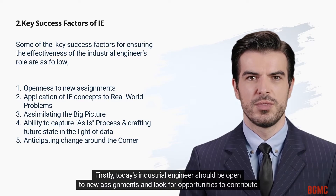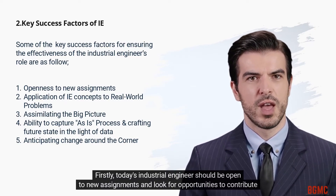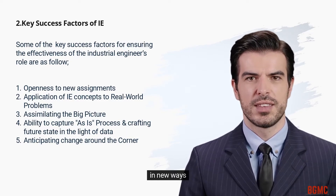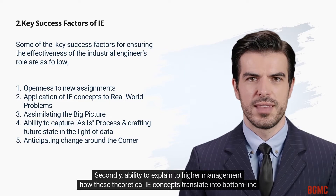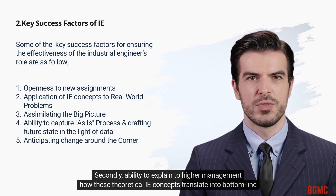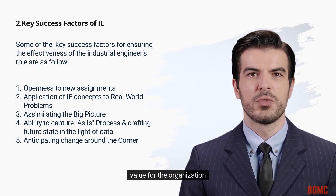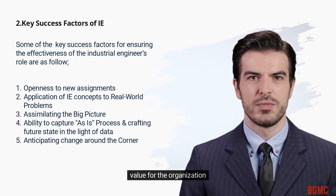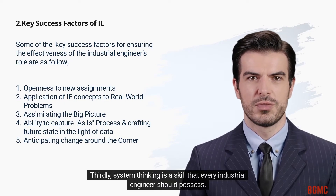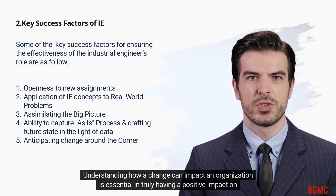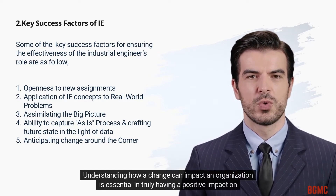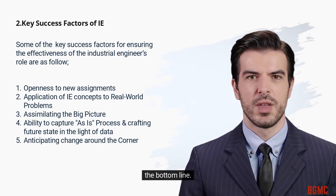Firstly, today's industrial engineer should be open to new assignments and look for opportunities to contribute in new ways. Secondly, the ability to explain to higher management how theoretical IE concepts translate into bottom-line value for the organization is essential. Thirdly, systems thinking is a skill that every industrial engineer should possess, as understanding how a change can impact an organization is essential to truly having a positive impact on the bottom line.